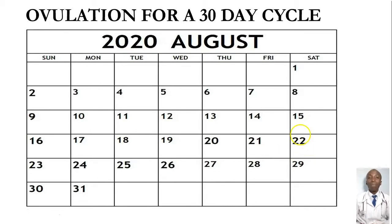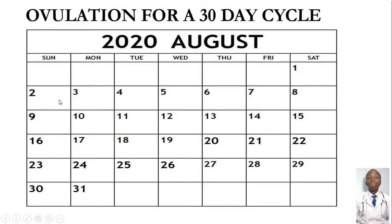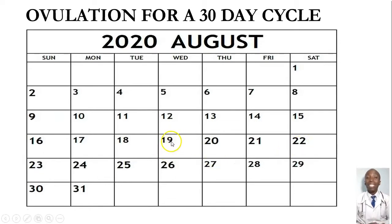What we have to learn from today's lesson is that you simply have to begin counting from the first day when you see your periods and then count 14 days. On the 14th day, there is an allowance of 3 days upwards and 3 days backwards. In other words, if your ovulation date is 19th, we give an allowance of 3 days back and then 3 days in front.